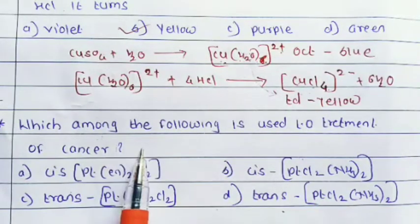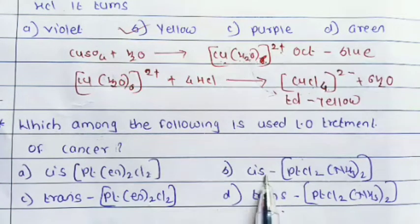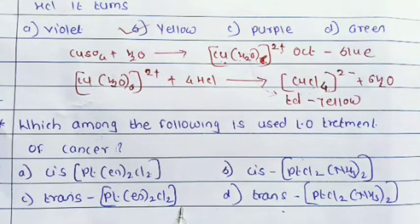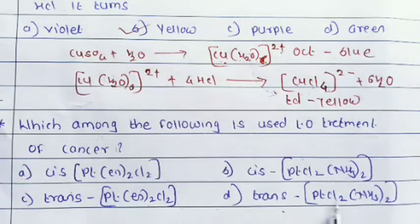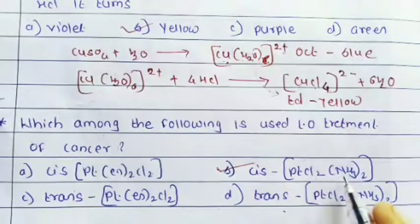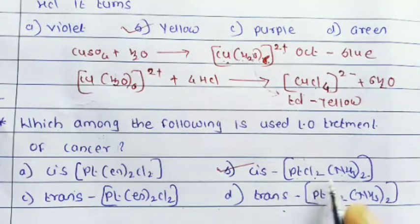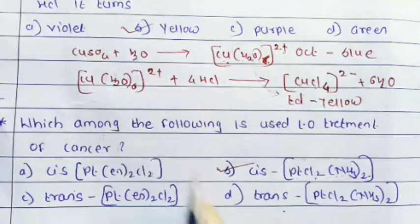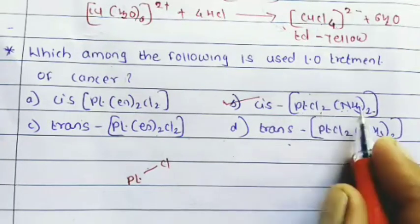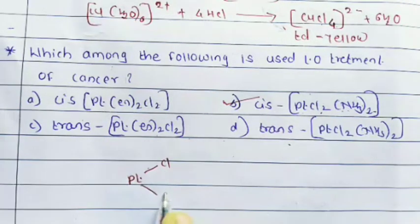Next question: which among the following is used for treatment of cancer? Options: (1) cis-[Pt(en)₂Cl₂], (2) cis-[PtCl₂(NH₃)₂], (3) trans-[Pt(en)₂Cl₂], (4) trans-[PtCl₂(NH₃)₂]. The answer is cis-[PtCl₂(NH₃)₂], where platinum is the central atom with two chlorine and two NH₃ groups in cis configuration.